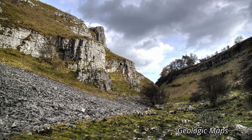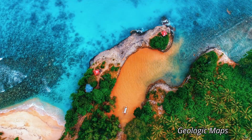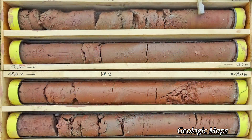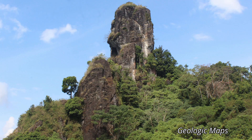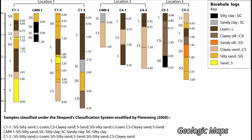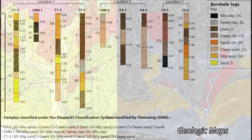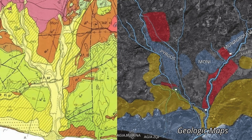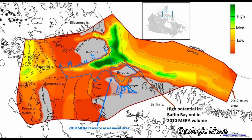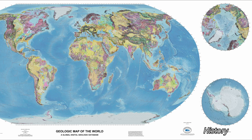Geologic maps can be based on observations of outcrops in the field, interpretation of aerial photographs or satellite images, or information obtained during the drilling of exploratory boreholes. Outcrops can be obscured, particularly in areas covered by dense vegetation or thick soil, and borehole information is often limited. Therefore, geologic maps are in most cases interpretive rather than purely descriptive scientific documents, and are used for purposes including petroleum, mineral, and groundwater exploration.